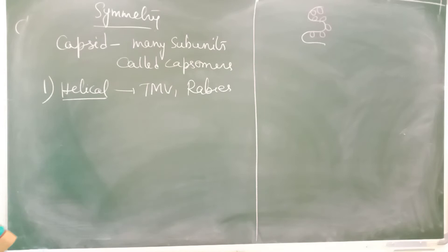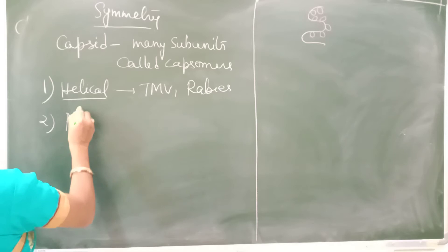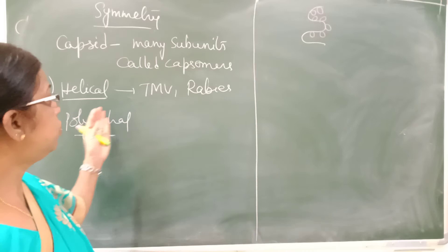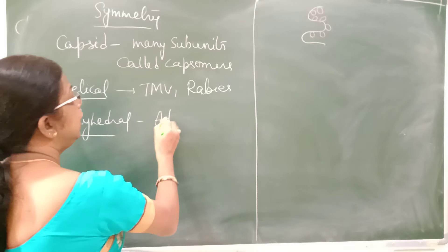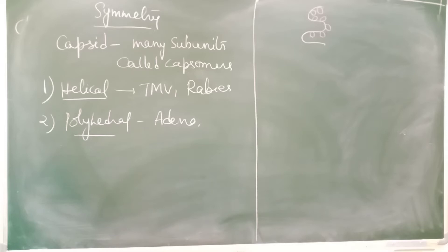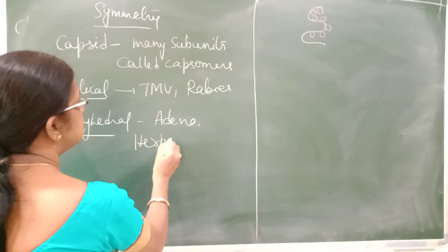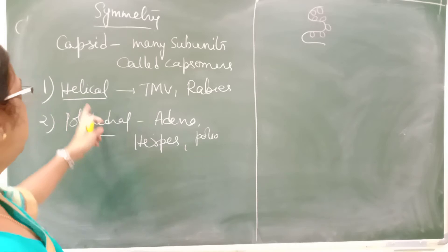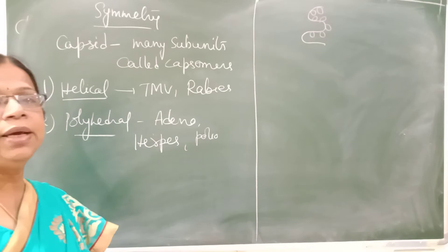The second type is called polyhedral symmetry. Polyhedral means many sides, so the virus shows many sides. Polyhedral symmetry is found in adenovirus, as well as in herpes and polio viruses. So helical symmetry is found in rabies and TMV, while polyhedral symmetry is found in adenovirus, herpes, and polio viruses — all of which are animal viruses.